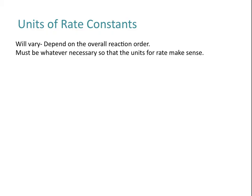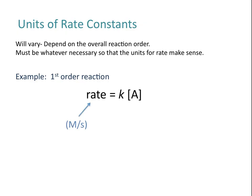The units of the rate constant have to be whatever is necessary for the units of rate to make sense. For example, if you have a first order reaction, the rate is equal to the rate constant times the concentration of one reactant raised to the first power. Your rate is always going to be given in units of concentration per time — it doesn't matter whether you have molar or millimolar, or seconds, minutes, or hours. You just need to adjust the units for the rate constant so that the units of rate work out.